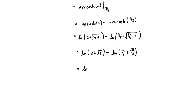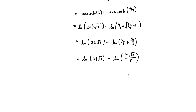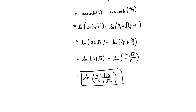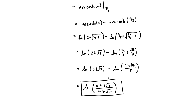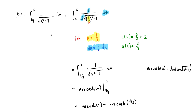Carefully computing this: this is natural log of 2 plus root 3, minus the natural log of 4 thirds, and 16 minus 9 is 7, so this will be the square root of 7 thirds. Altogether, combining a little more: this is log of 2 plus root 3, minus the log of 4 plus root 7 over 3. Using the quotient rule for logs, this final number is the log of 6 plus 3 root 3 divided by 4 plus root 7. That's our answer to that first integral. This is the exact answer — that's the definite integral of this function.